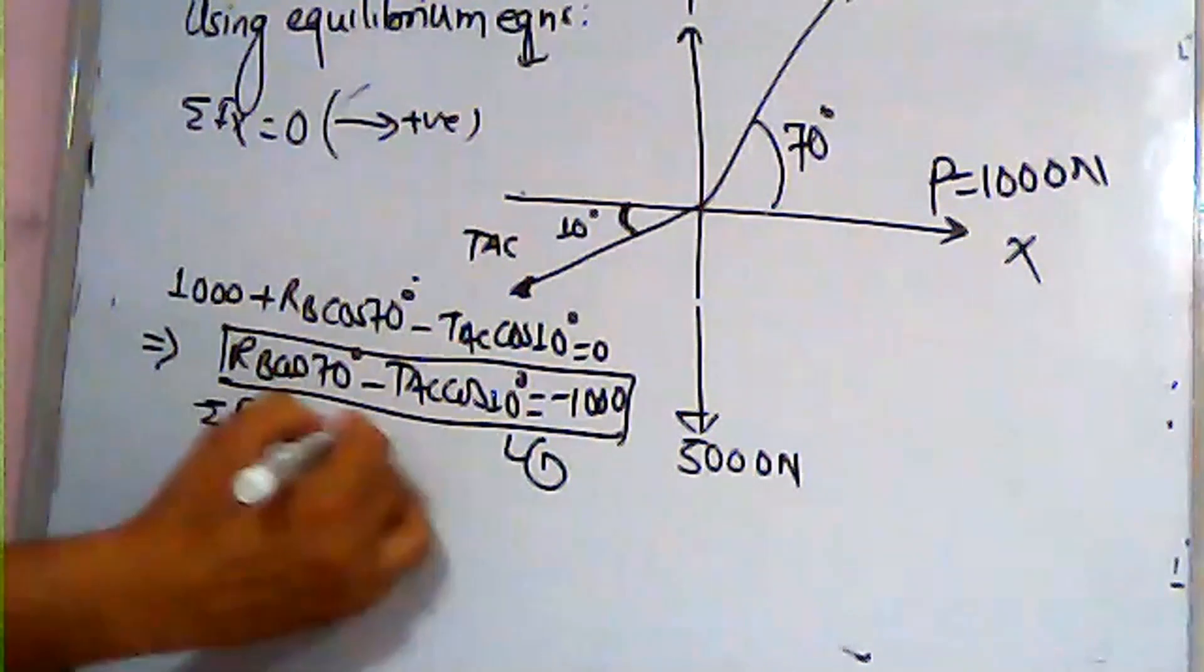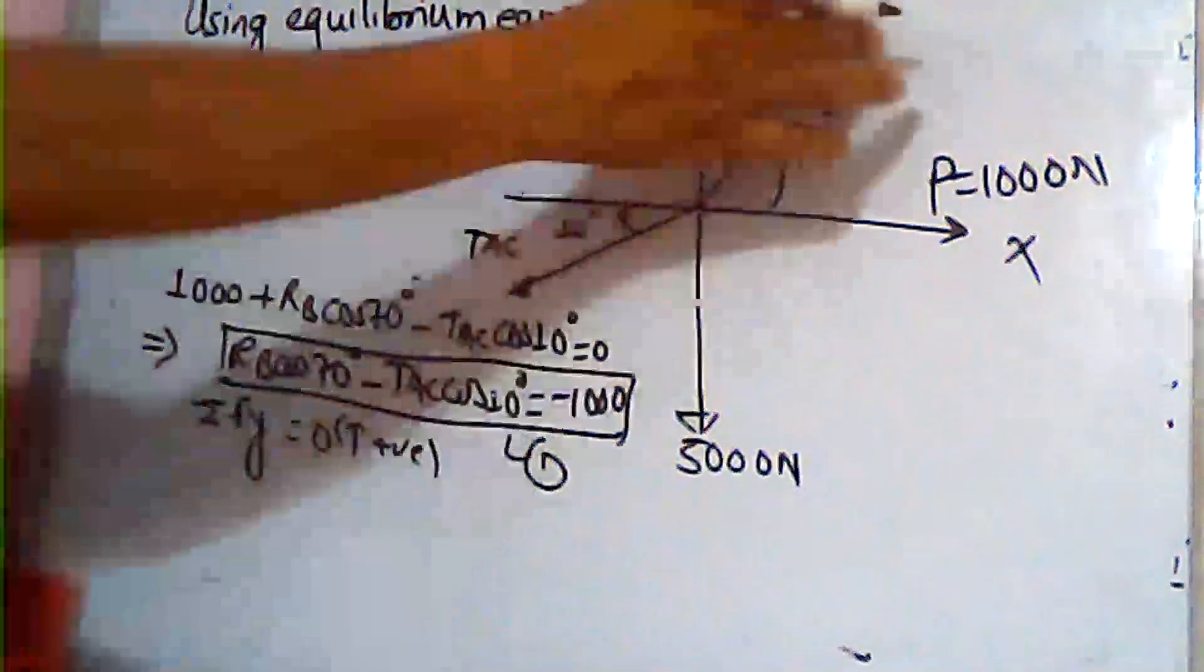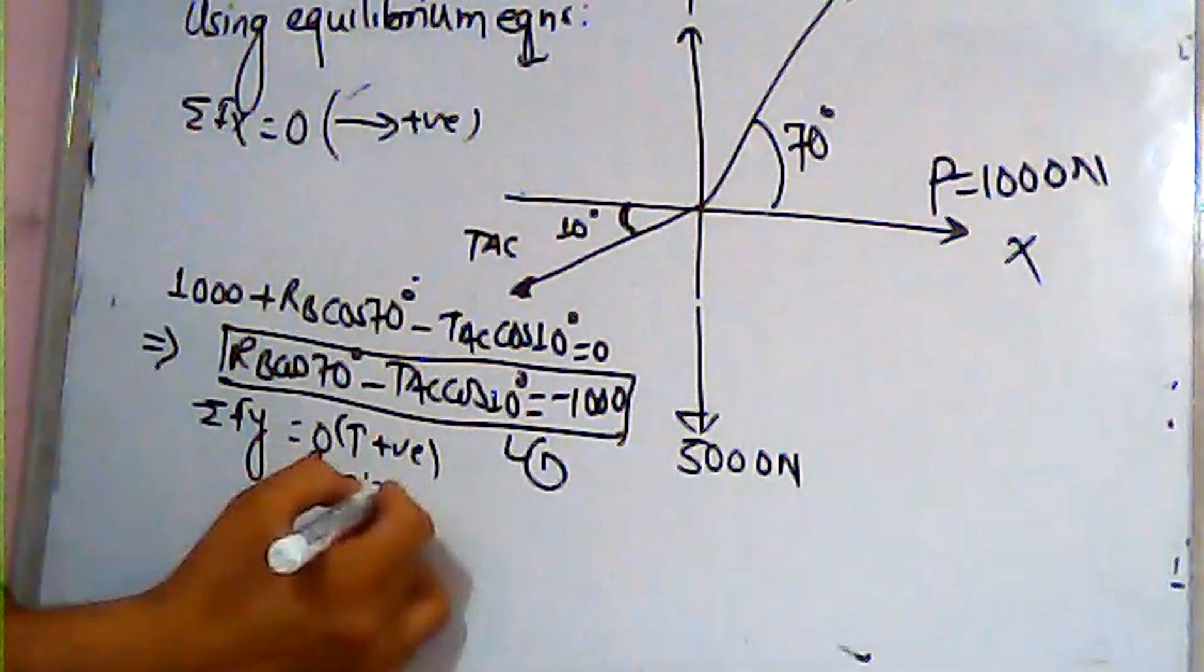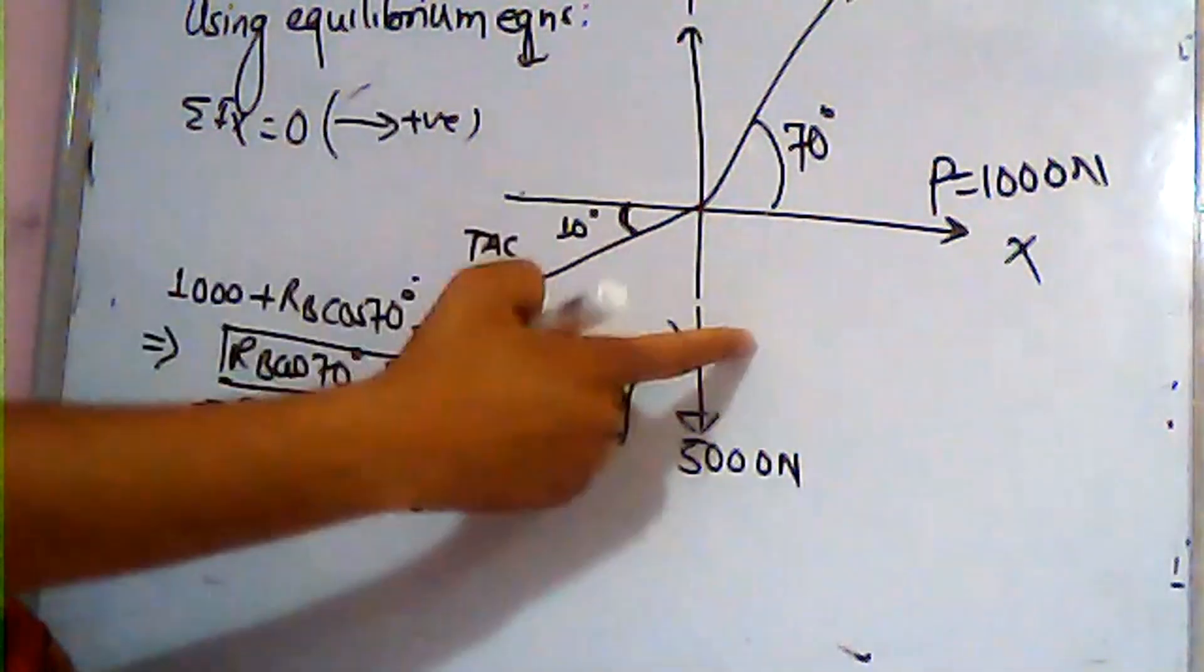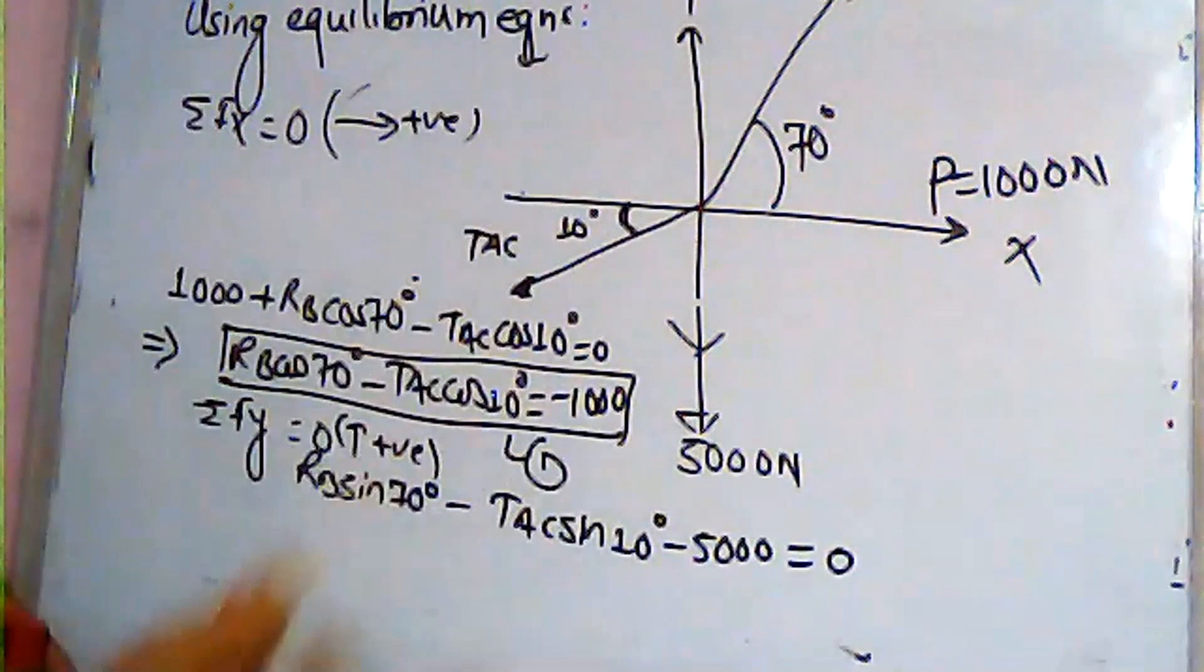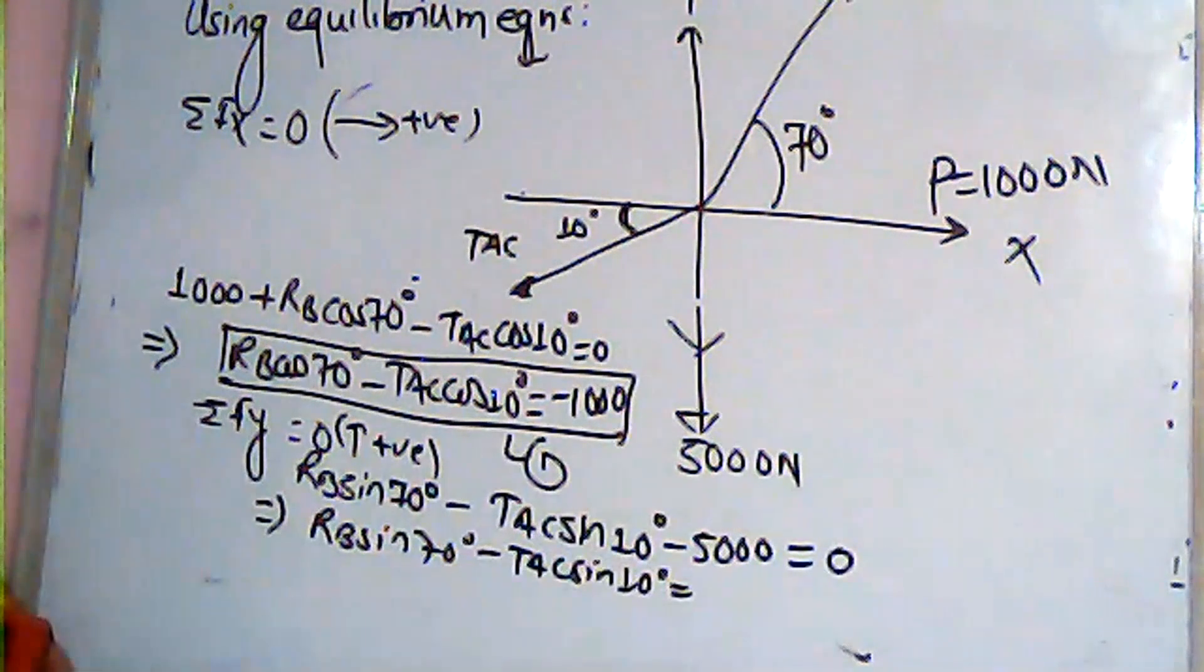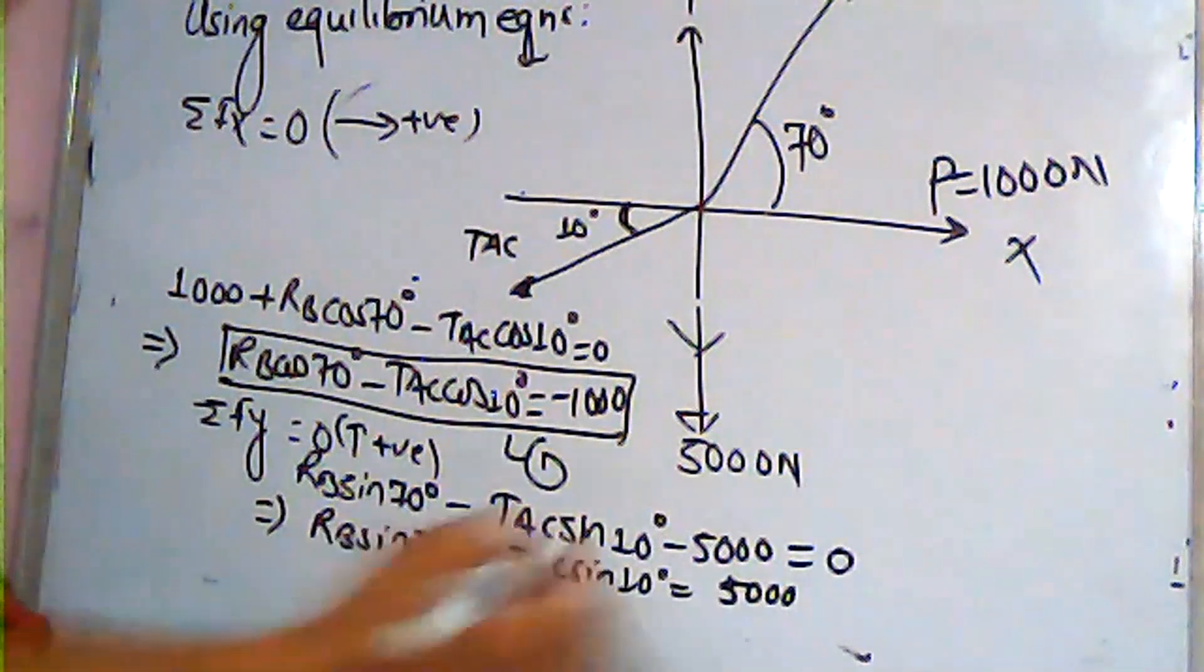In Y direction, summation of forces in Y direction is equal to zero. Upward is positive. RB sin 70 degree minus TAC sin 10 degree minus 5000 equals zero. So RB sin 70 minus TAC sin 10 degree is equal to 5000 newton.